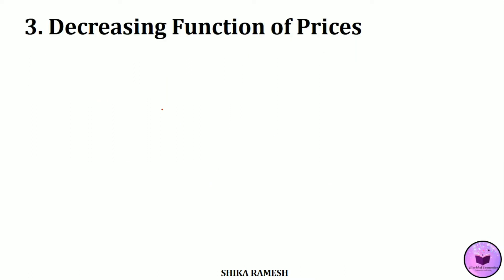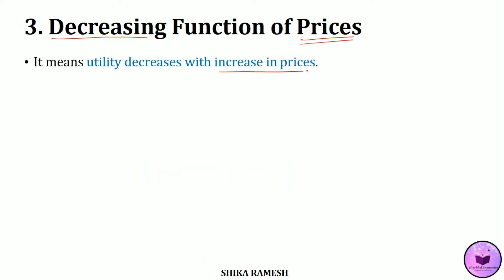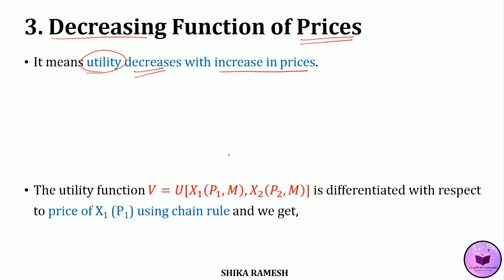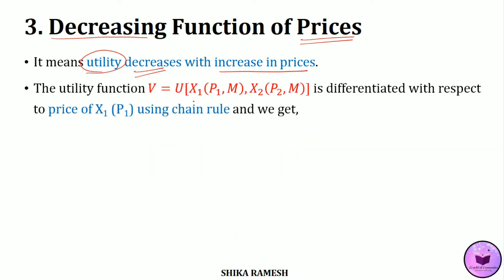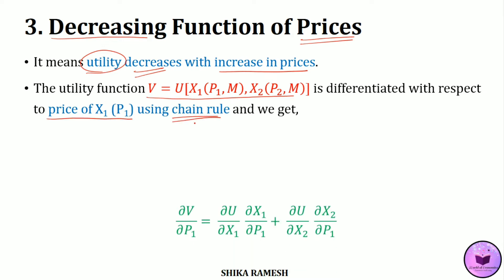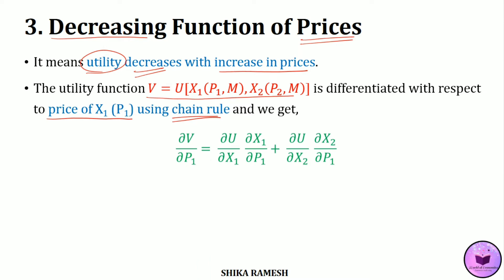The third property is that the Indirect Utility Function is a decreasing function of prices. This means that when the prices of goods increase, the consumer's utility decreases. To prove this, we differentiate the utility function with respect to the price of x1 using the chain rule, giving: ∂v/∂p1 = (∂u/∂x1)·(∂x1/∂p1) + (∂u/∂x2)·(∂x2/∂p1).